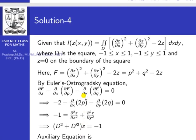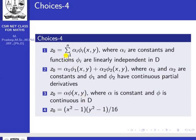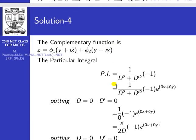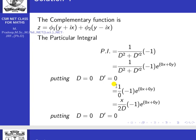From this conclusion we can evaluate the options. Option 1: z₀ = Σ αᵢφᵢ(x,y) where αᵢ are constants and φᵢ are linearly independent — this is correct. Option 2: z₀ = α₁φ₁(x,y) + α₂φ₂(x,y) where α₁, α₂ are constants and φ₁, φ₂ have continuous partial derivatives — also correct. Option 3: z₀ = α·φ(x,y) where α is constant and φ is continuous in D — also correct. So the first three options are correct.